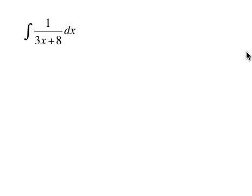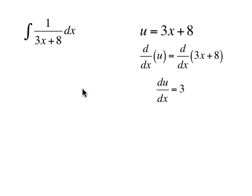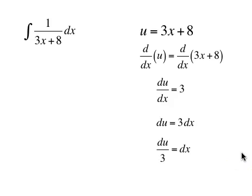Our next question is the antiderivative of 1 over 3x plus 8. Let u equal 3x plus 8, and take the derivative with respect to x of both sides. The derivative of u with respect to x is du/dx, and the derivative of 3x plus 8 is 3, so du/dx is 3. Our strategy is to solve for dx, so du divided by 3 substitutes for dx.